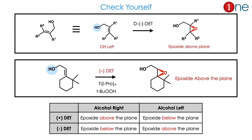Here I've given some examples to practice yourself. If you look at the first example, you have to bring the alkene above and you have minus DET with alcohol on the left side. Alcohol on the left side with minus DET means the epoxide forms above the plane.